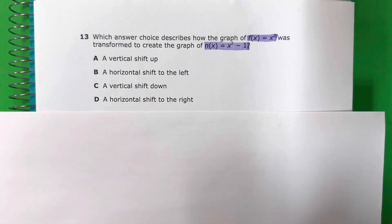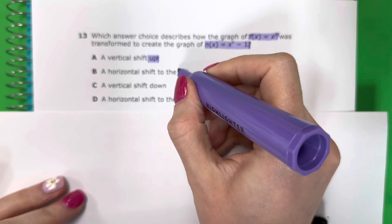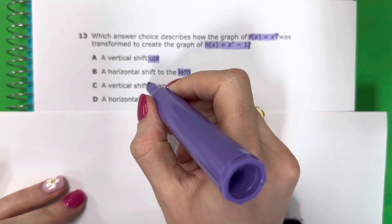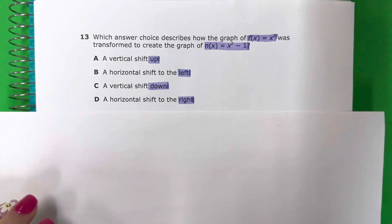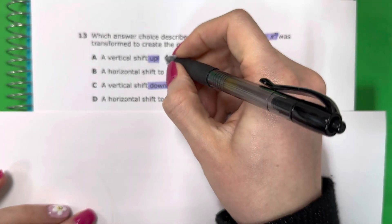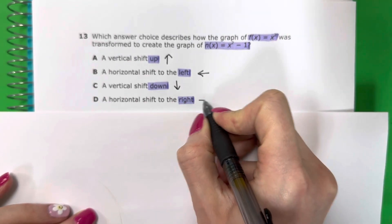Did it move up? Arriba. Left? Izquierda. Down? Abajo. Or right? Derecha. Okay, so let's go ahead and write these down. So up, left, down, right.